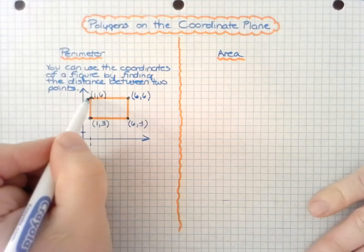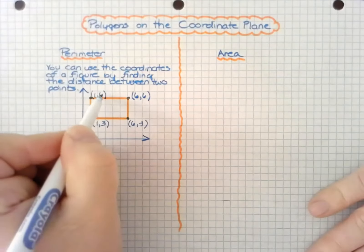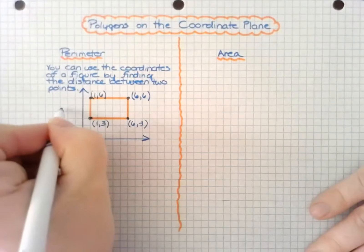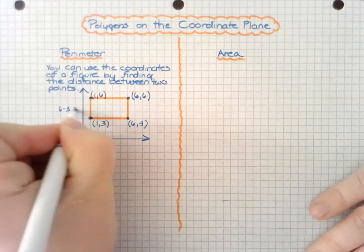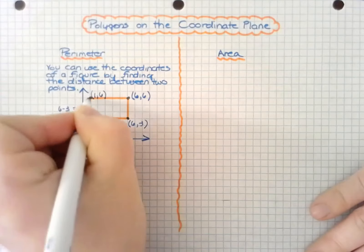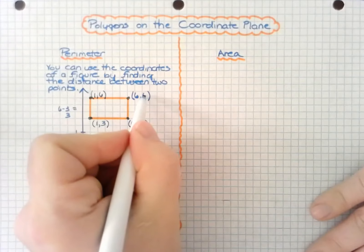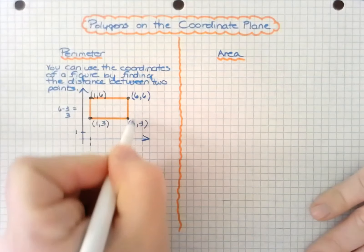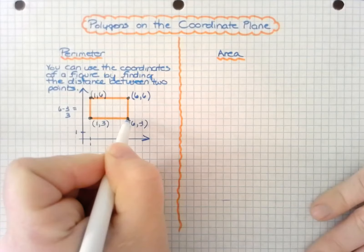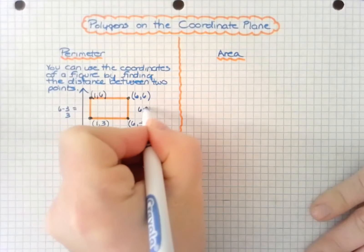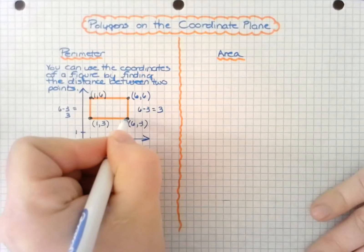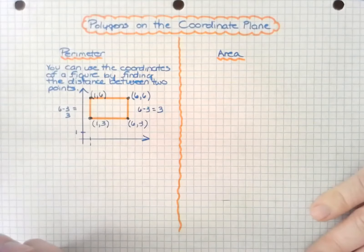Notice how from this point to this point, the x value stays the same but the y value changes. The y value changes by 6 minus 3, or 3 units. Notice there's 1, 2, 3 boxes on this side. Over here, the x value again is the same because all I've done is go up or down vertically, and that is 6 minus 3 equals 3. I'm taking the y values and subtracting them.